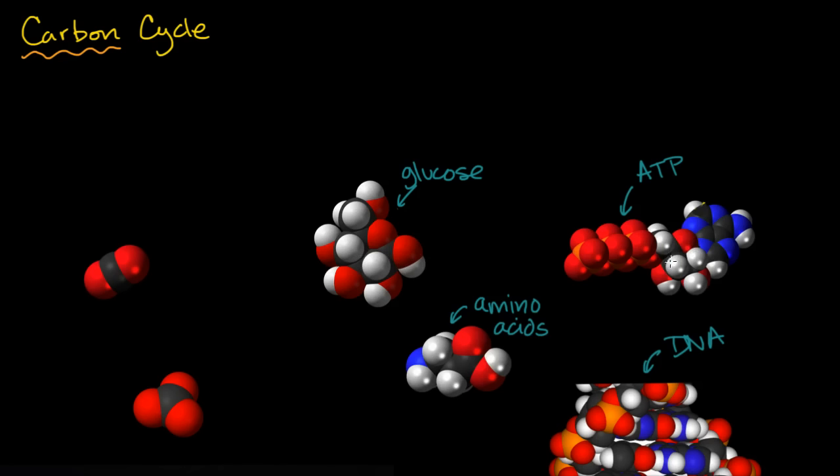In fact, sometimes the carbon's hard to see because it's closer to the center of these molecules because the carbon, for the most part, forms a backbone. Because carbon's this really neat element, this really neat atom that can make four bonds. So it can make these really cool structures.